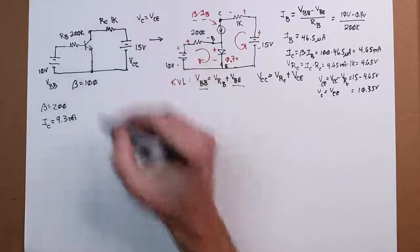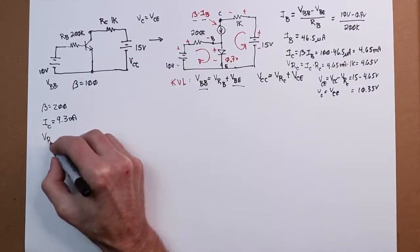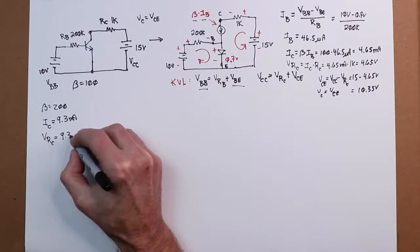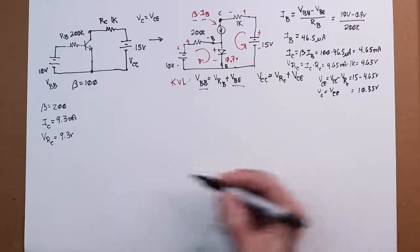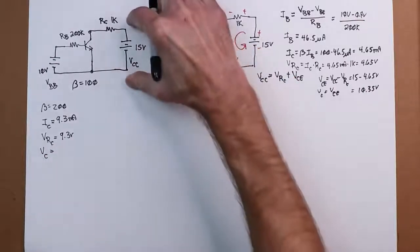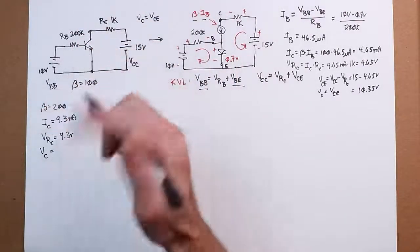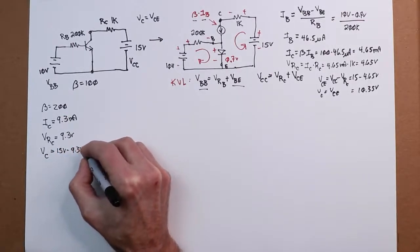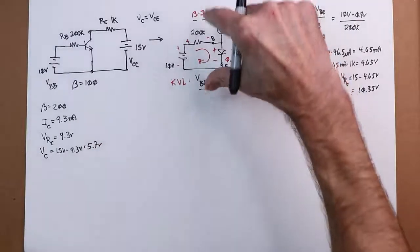So IC will wind up going to 9.3 mils, and notice what happens here. Because that goes up, that means the drop across the collector resistor has to go up. So V of RC is also going to double from 4.65 to 9.3 volts. And because of that, the collector voltage is going to go down because we only have 15 volts to start with. So we see an inverse relation here. That's going to be 15 volts minus the 9.3, or 5.7 volts. So as the current goes up, the collector emitter voltage goes down.